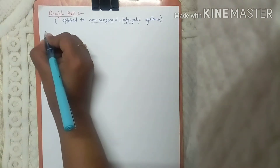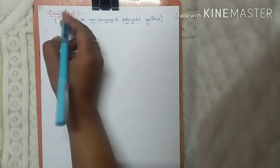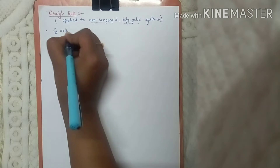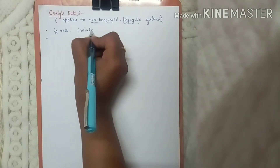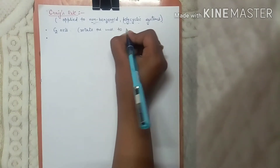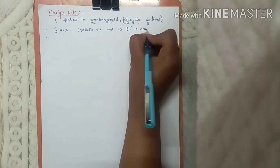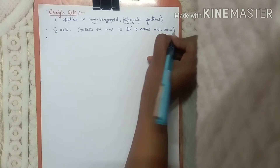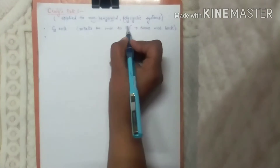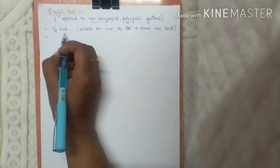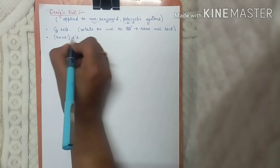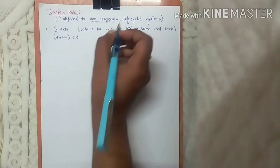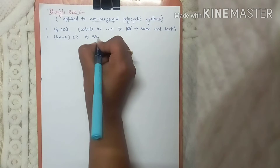For Craig's rule to be applied, there should be a presence of a C2 axis in the molecule. C2 axis means if you rotate the molecule by 180 degrees you get the same molecule back. If there are 4n+2 number of electrons present in that non-benzenoid polycyclic system, then that compound is aromatic.